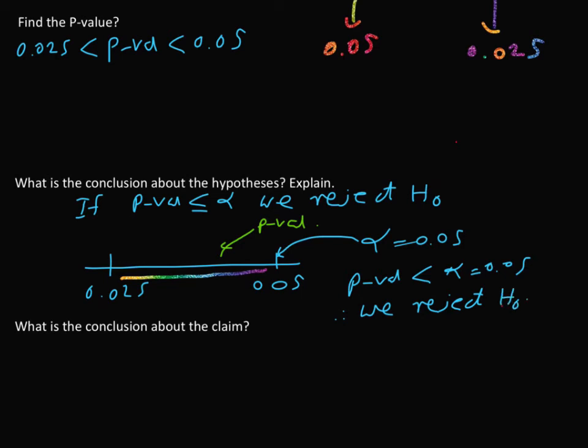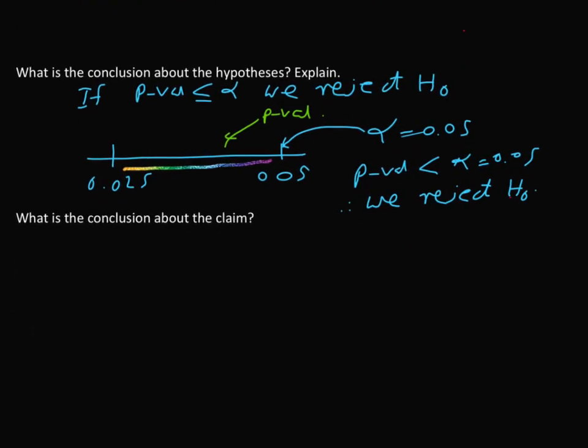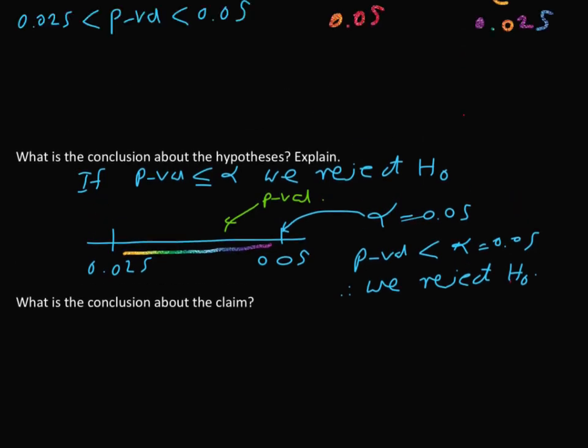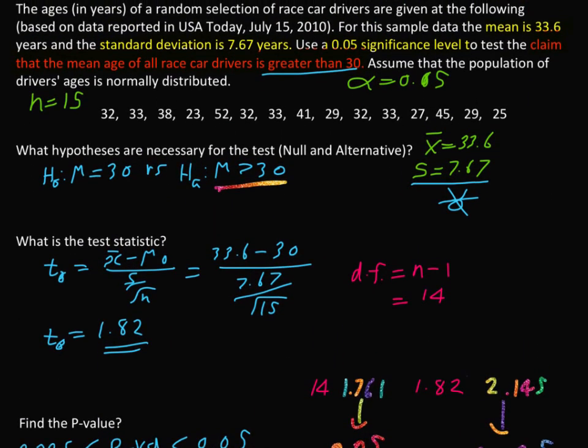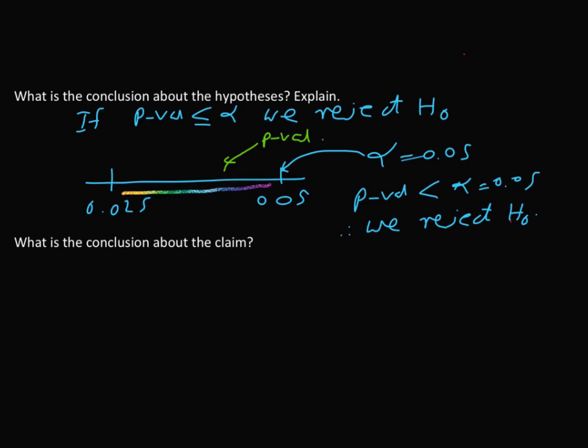Then asking what is the conclusion about the claim. So conclusion: reject H0. Reject H0 means go to this again. So you look at here, reject H0 means this one is rejected, then we should go with this. There is sufficient evidence to support the claim that the mean age of all race car drivers is greater than 30.